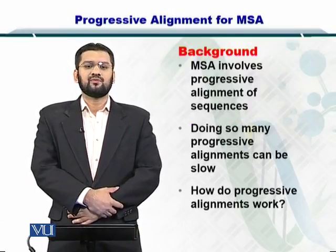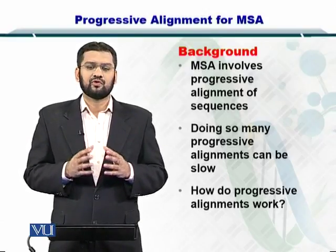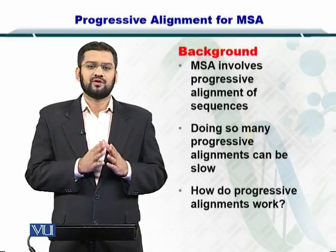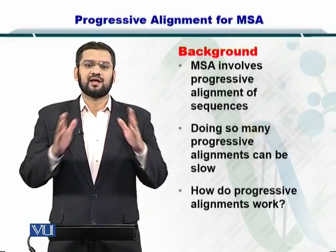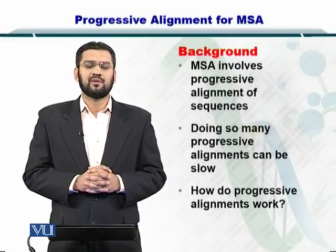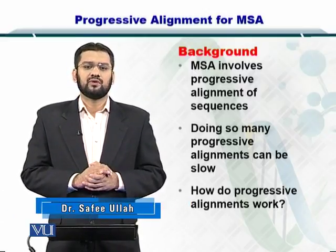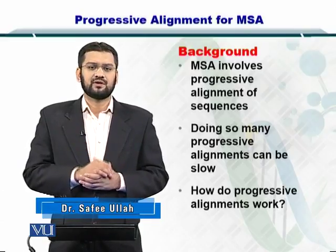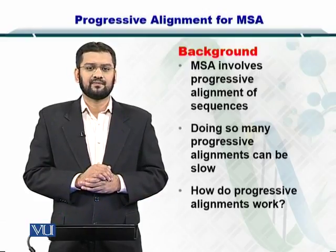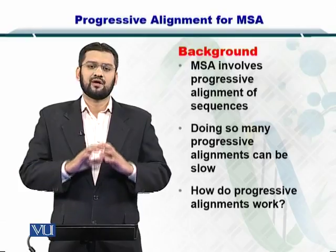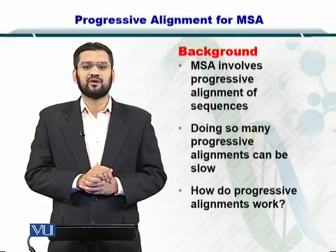MSA involves progressive alignment by using pairwise sequence alignment repeatedly. You initially align two sequences and create such sequence alignment pairs, then you align the pairs to obtain an overall multiple sequence alignment. However, because of the iterative nature of MSA, it will take a lot of time — progressive alignment takes a lot more time than a simple pairwise alignment.